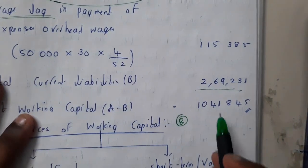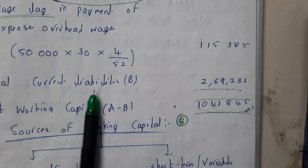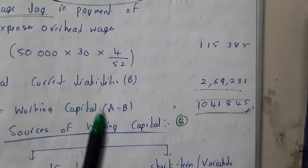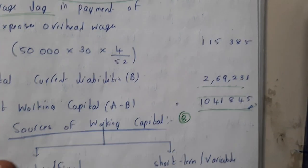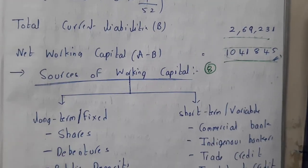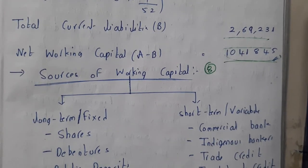Subtracting current liabilities from current assets: 13,11,076 minus 2,69,000 gives approximately 10 lakhs as the net working capital. I hope everyone got a clear idea on this. In the next lecture, we'll go through sources of working capital. Thank you for watching.